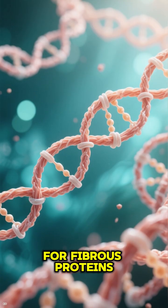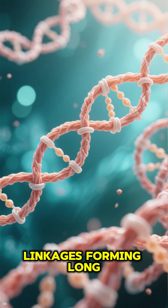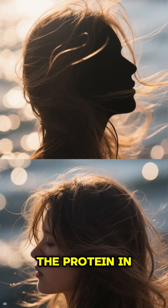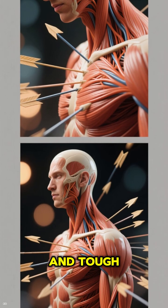For fibrous proteins, the polypeptides are in parallel chains with many cross-linkages forming long fibers. For example, keratin, the protein in our hair, is a fibrous protein, so it's strong and tough.